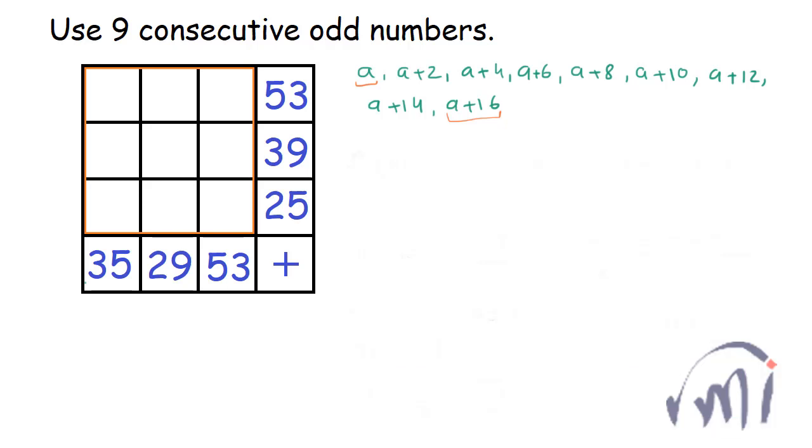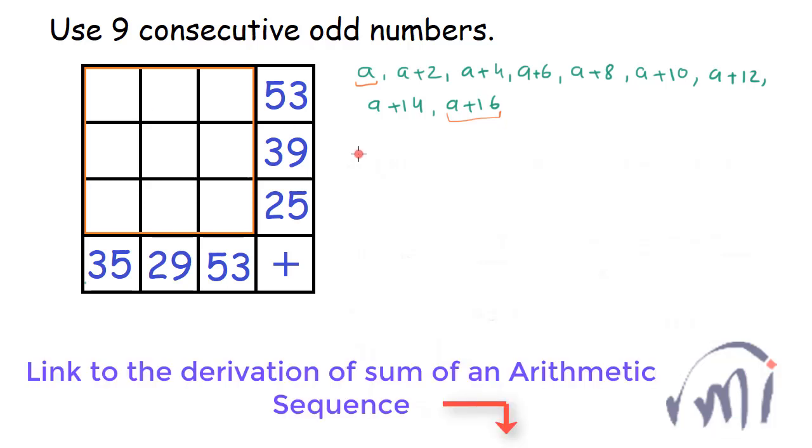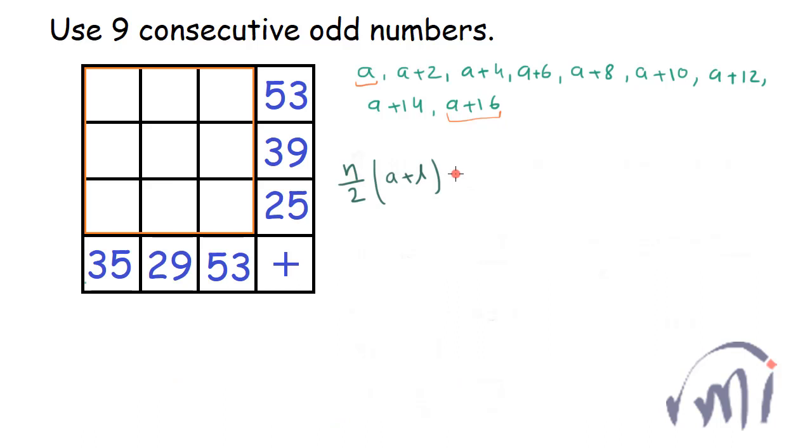So sum of an arithmetic series whose first and last term is known is given as N divided by 2 multiplied by A plus L, where A is the first term and L is the last term and N is the number of terms. So here we have total nine terms, so 9 divided by 2.